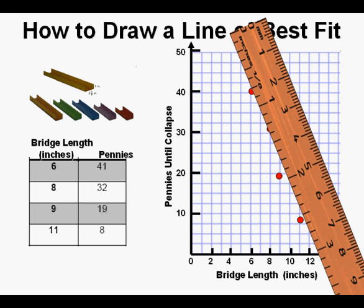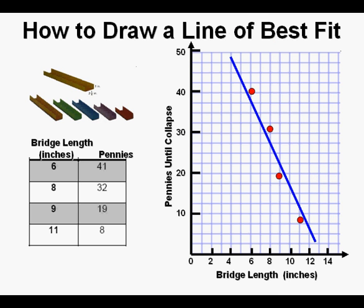A line of best fit is a single line that matches all the points as well as possible. First, get a ruler and line up the points as well as possible and draw the line, which looks something like this.